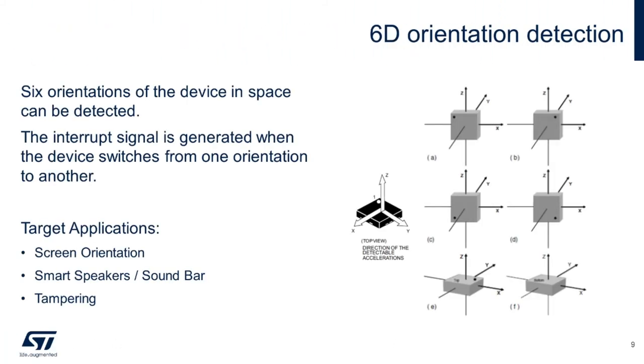The last demo that I wanted to show you today is the 6D orientation detection, that is also one of the most popular smart features of our accelerometers. The goal here is to generate an interrupt whenever the device switches from one orientation to the other. Note that you can actually know the orientation of the device by reading the status register of the 6D interrupt.